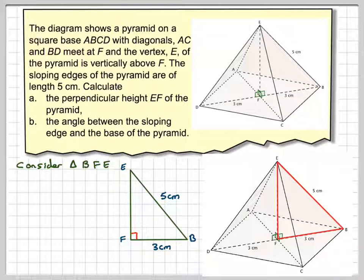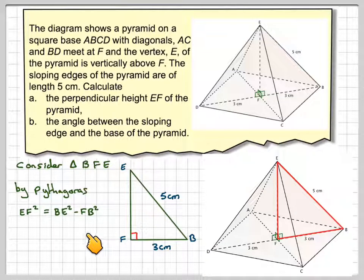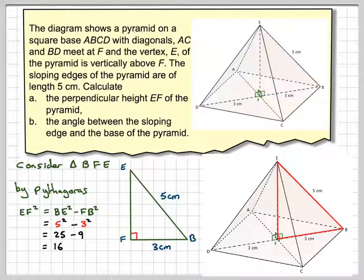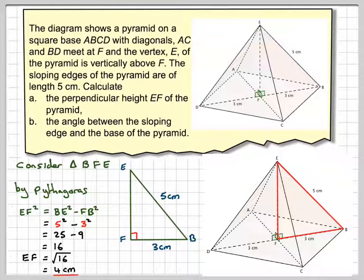We now have to calculate the length EF. So by Pythagoras, EF squared is equal to BE squared minus FB squared. Why is it minus? Because this side is one of the shortest sides. We're trying to find the length on a smaller side, so it's going to be the larger side squared minus the smaller side squared. So it's 5 squared minus 3 squared, which is 25 minus 9, equals 16. Therefore the square root of 16 is equal to 4 centimeters. So the height of the pyramid is 4 centimeters.